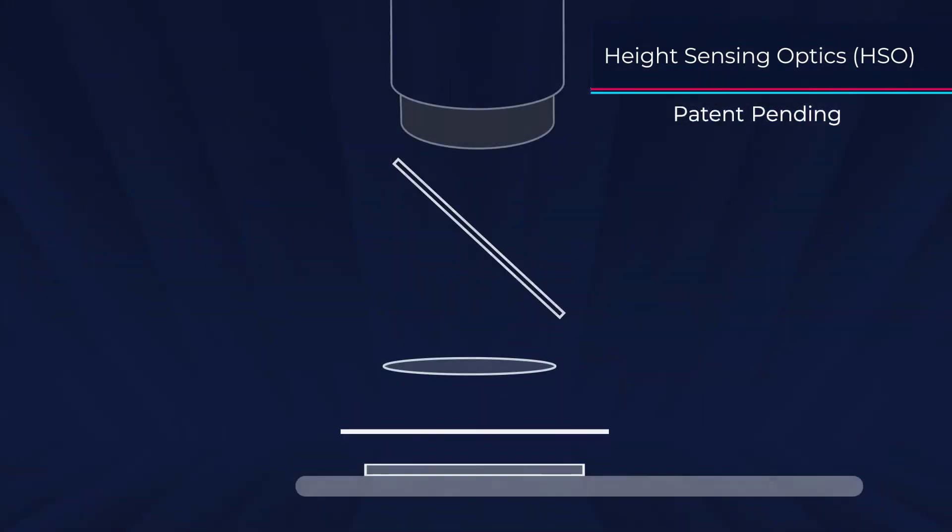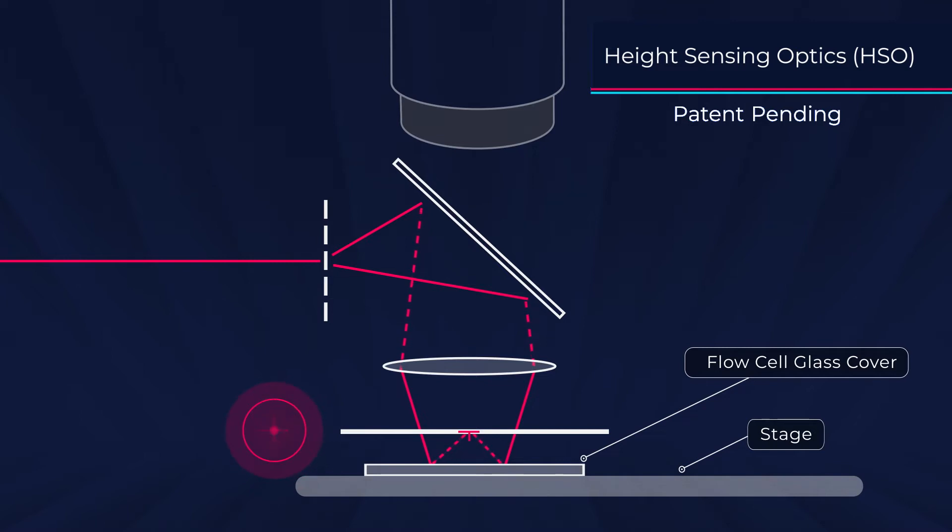A near-infrared beam of light projects a patterned beam onto the sample at different Z-planes. The Z-plane where the reflection of the pattern from the glass cover is sharply focused indicates the height of the sample.